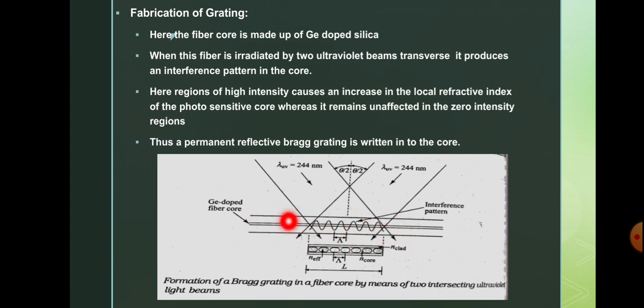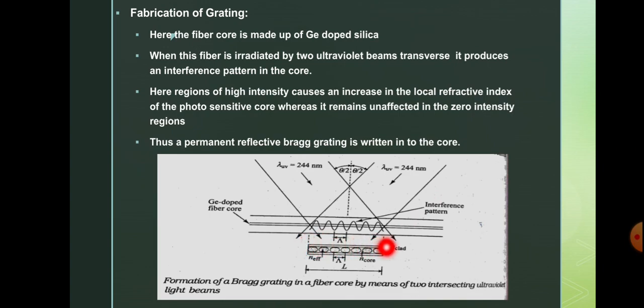This is the fibre structure with the core indicated. Because of that UV irradiation, regions of high intensity cause an increase in the local refractive index of the photosensitive core, whereas it remains unaffected in the zero-intensity regions. Where constructive interference takes place, refractive index will be higher; where destructive interference takes place, refractive index will be lower. This produces a sinusoidal variation of the refractive index — that is the interference pattern.